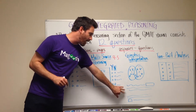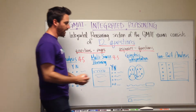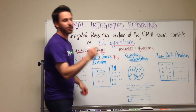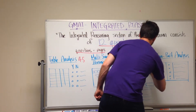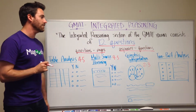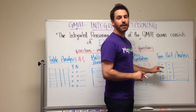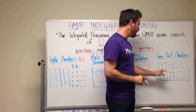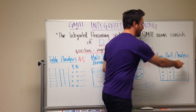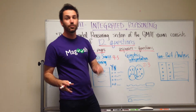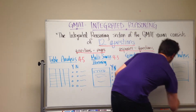Graphic interpretation is going to have maybe two or three statements below your graph, and there's going to be a drop-down menu. You click on the drop-down menu and you have three or four options in there, so you're going to have two, maybe three, questions on a page. And the two-part analysis gives you a table where you're bubbling in on one side and bubbling in on the other side, choosing one statement from each — so it's kind of like having two questions.